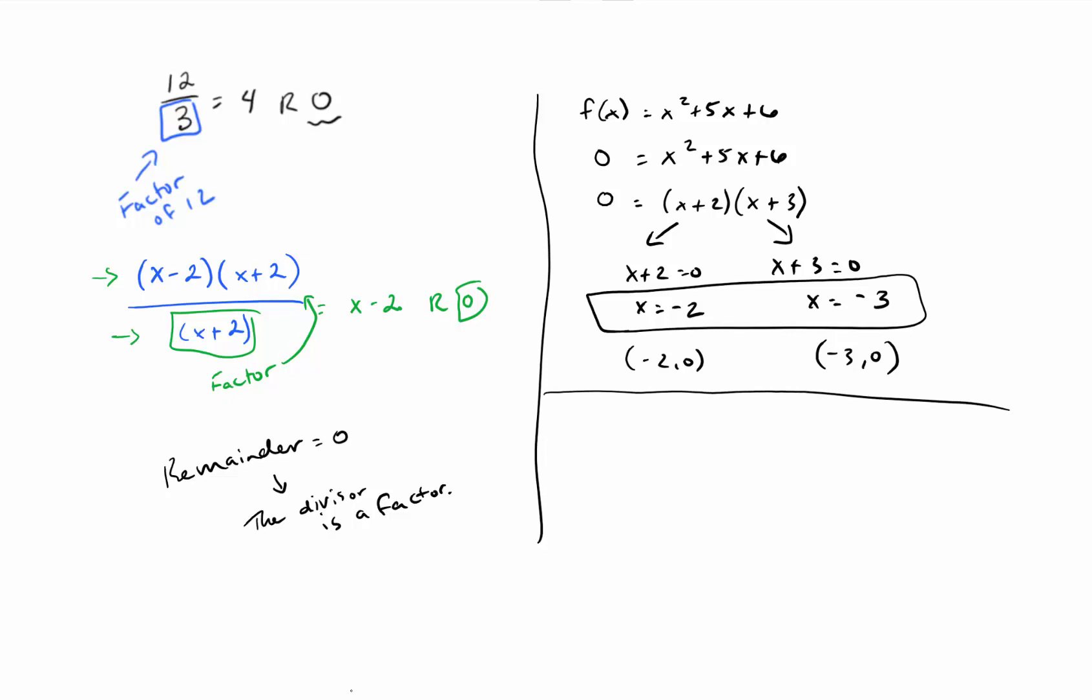Just as we said before, since we know that these are factors, we know that they would have a remainder of 0 if they were divided into our original function. So we can check to see if something is a factor or a 0 if we use synthetic division and then check the remainder. For example, let's say we had something like this.